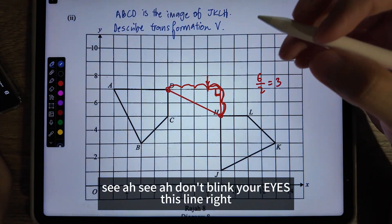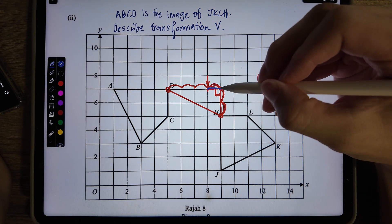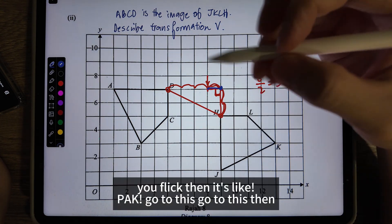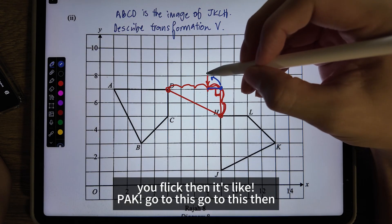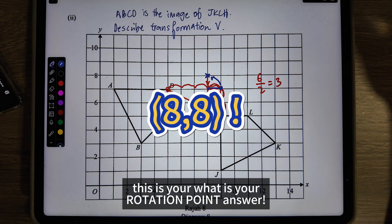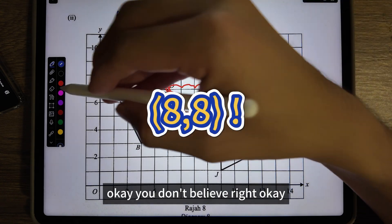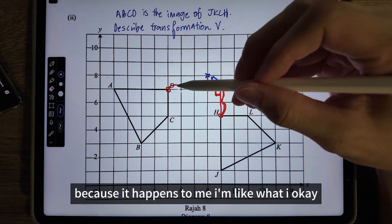You see what you do? Don't blink your eye. This line, right? From your 90 degrees, you flick. Then it goes to this - this is your rotation point, sir! You don't believe it, right? Because it happened to me. I'm like, what the heck?